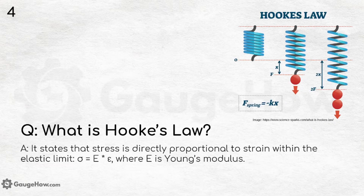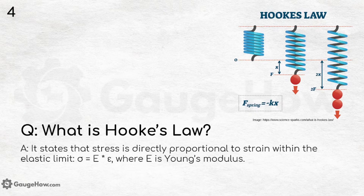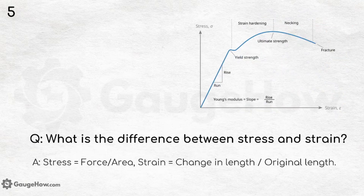What is Hooke's Law? It states that stress is directly proportional to strain within the elastic limit — that is, sigma equals E times epsilon, where E is Young's modulus, sigma stands for stress, and epsilon stands for strain. What is the difference between stress and strain? Stress is force per unit area, while strain is change in length divided by original length.